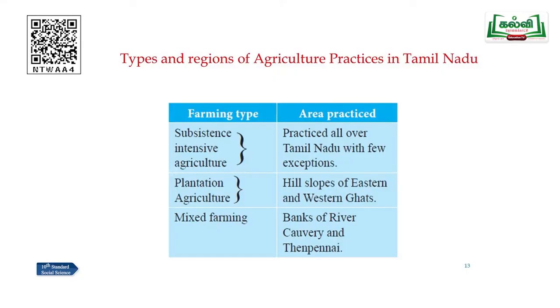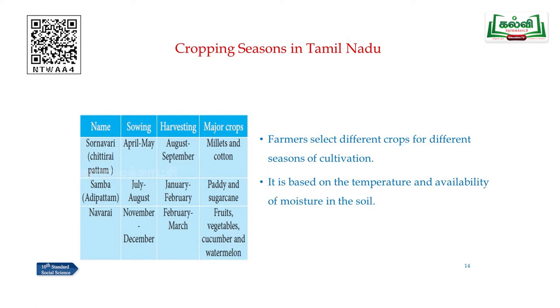To summarize, the types and regions of agriculture practices in Tamil Nadu are: subsistence intensive farming practiced all over Tamil Nadu; plantation agriculture on the hill slopes of the Eastern and Western Ghats; and mixed farming on the banks of rivers Cauvery and Tenpennai. Till now we have discussed the four geographical determinants: land, climate, soil and irrigation. Next, we are seeing the cropping seasons in Tamil Nadu.